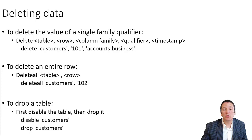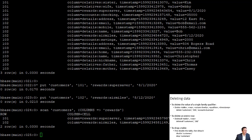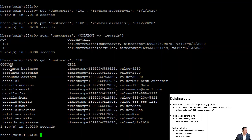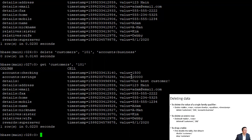To delete the value of a single column family qualifier, we use the 'delete' command: 'delete customers, 101, accounts:business'. First let's confirm customer 101 has a business account, a checking account, and a savings account. After running 'delete customers, 101, accounts:business', looking at customer 101 again shows no more business account — that column family qualifier has been deleted.